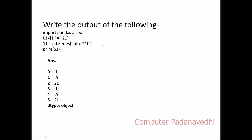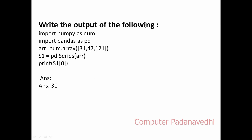Next output: import pandas as pd, L1 = [1, 'a', 21], S1 = pd.Series(data = 2 * L1). In a list, the symbol will be duplicated and repeated: [1, 'a', 21, 1, 'a', 21]. The index is 0, 1, 2, 3, 4, 5. In the series, multiplying by 2 repeats the list.